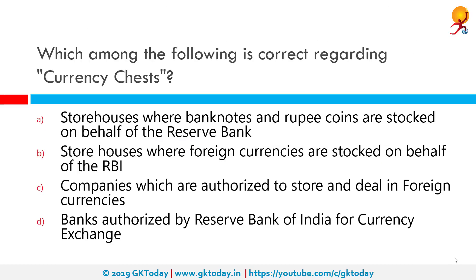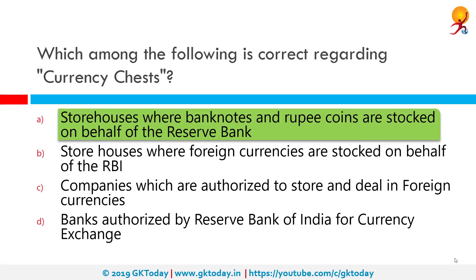Which among the following is correct regarding currency chests? The correct answer is that they are storehouses where bank notes and rupee coins are stocked on behalf of the Reserve Bank. Currency chests are branches of selected banks authorized by the RBI to stock rupee notes and coins. The responsibility for managing the currency in circulation is vested in the RBI.